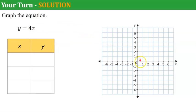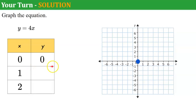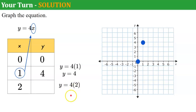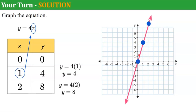Welcome back. Since this is a direct variation, it passes through the origin — plot that point and fill in the table. Using X equals 1: Y equals 4 times 1, so Y equals 4, giving us ordered pair (1, 4). Using X equals 2: Y equals 4 times 2, so Y equals 8, giving us ordered pair (2, 8). Plot those points, connect them with a line, and there you have it.